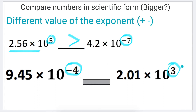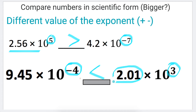In the second exercise, we again only compare the two exponents because they are different — the first is negative 4 and the second exponent is positive 3. All positive exponents are bigger than negative exponents. That means 2.001 times 10 to the power of 3 is a bigger scientific number than 9.45 times 10 to the negative 4. Word of caution: do not compare the decimal part of the scientific number when the exponents differ — only compare the exponents of 10.